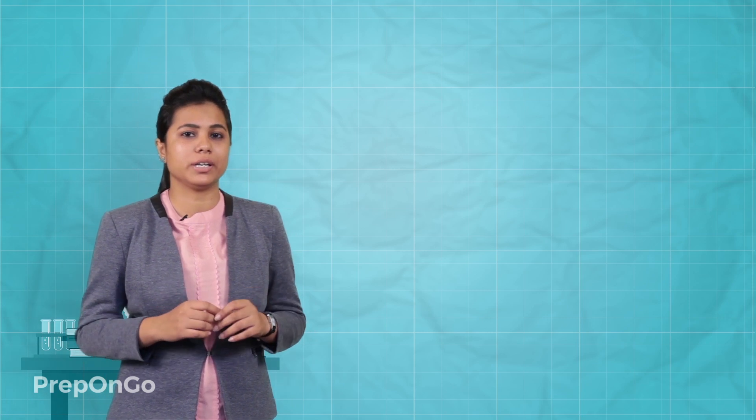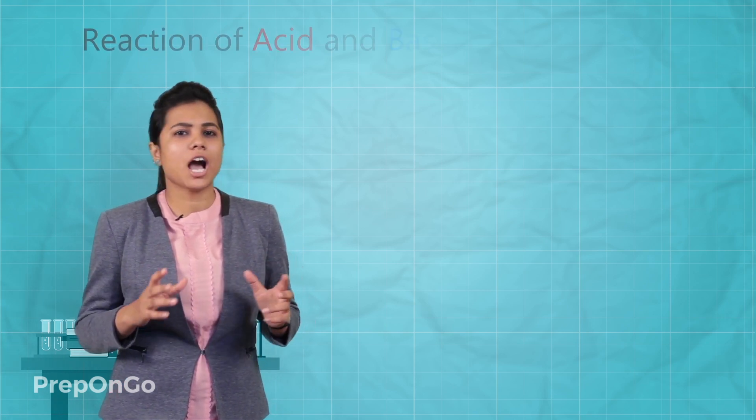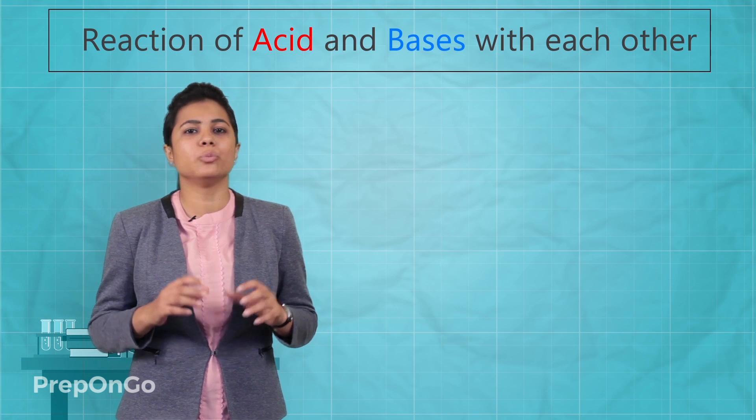Hello everyone. Till now we have seen how acids and bases reacted with metals. We also had a look at how metal carbonates and metal hydrogen carbonates reacted with acids. So let's see how acids and bases react with each other.